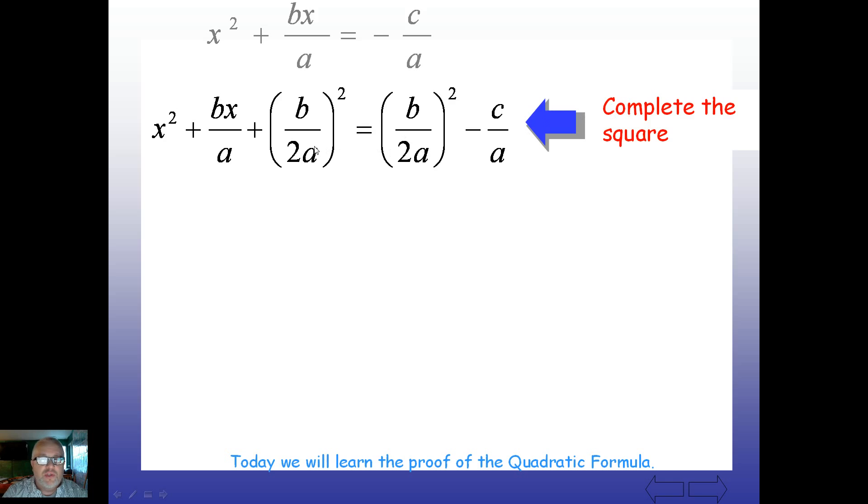So if we complete the square, whatever we do to one side, we do to the other. So I'm going to add this piece to both sides, add this piece to both sides. Our first time through, this is going to look pretty messy, but after we've done it a couple of times, and if you work with it and so on, you'll see the pieces start falling together here.